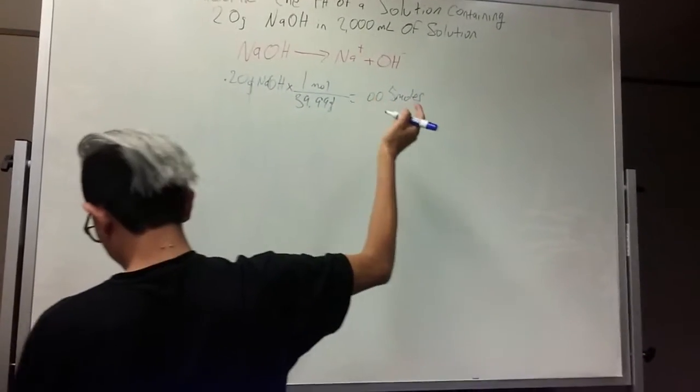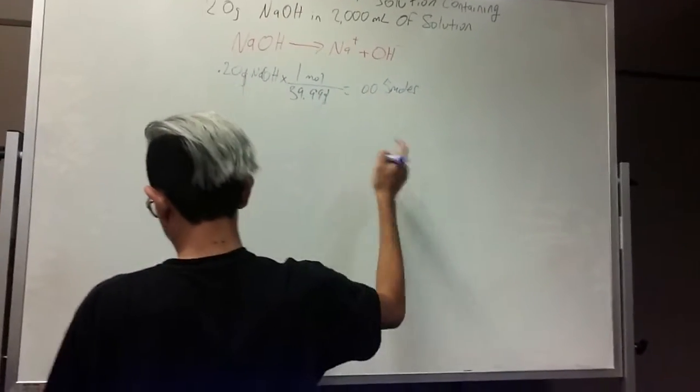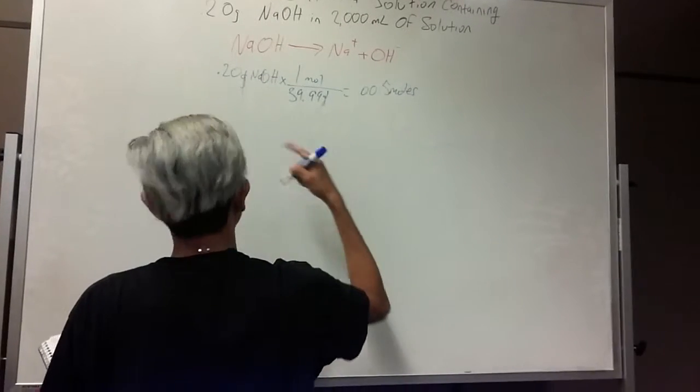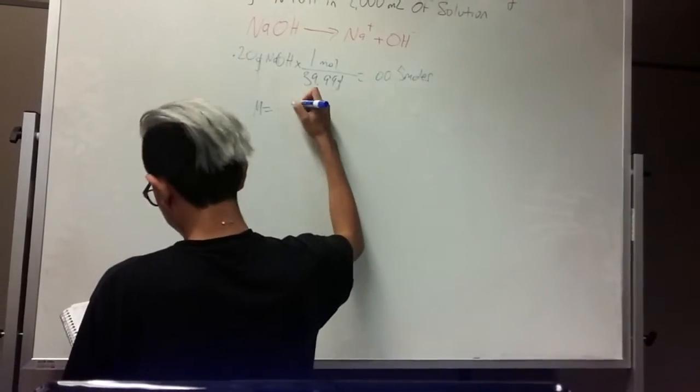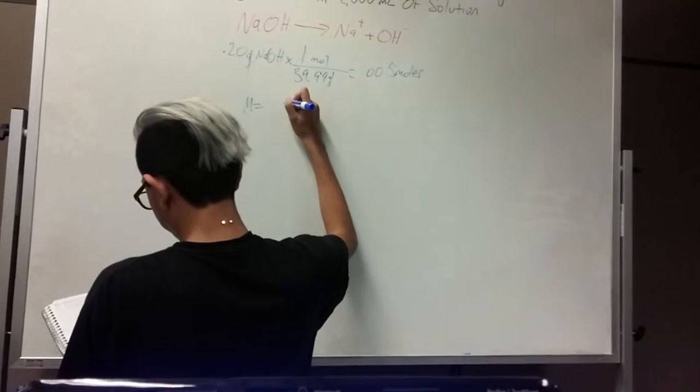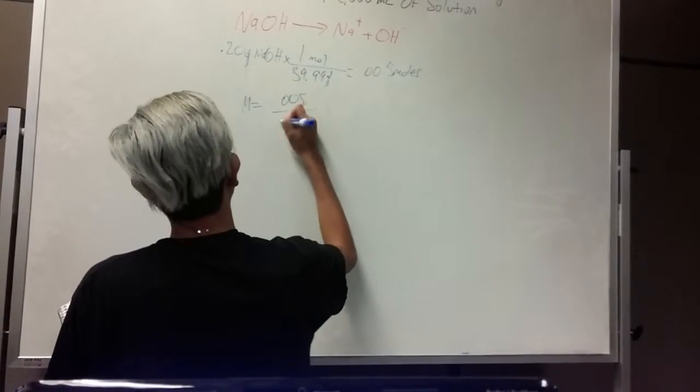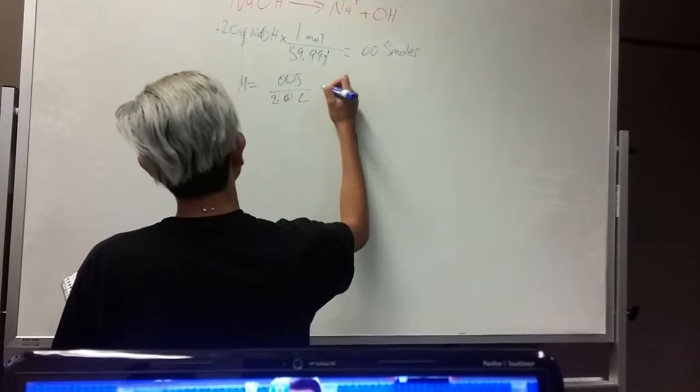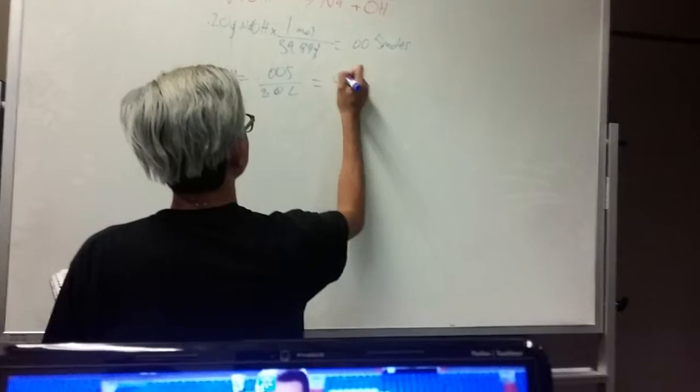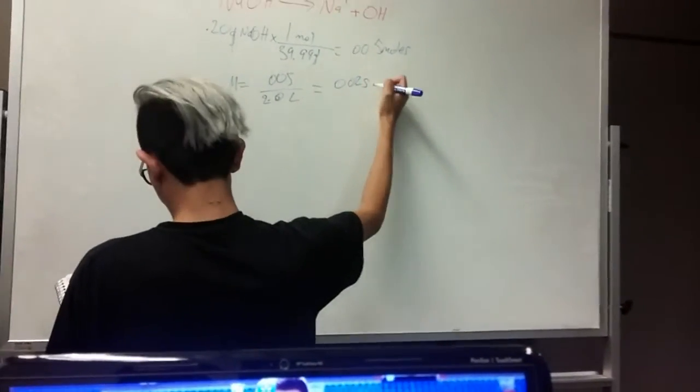Now you want to get molarity, so for that you get your moles divided by the liters of solution, which is 0.005 over 2.0 liters of solution. This gives you 0.0025.